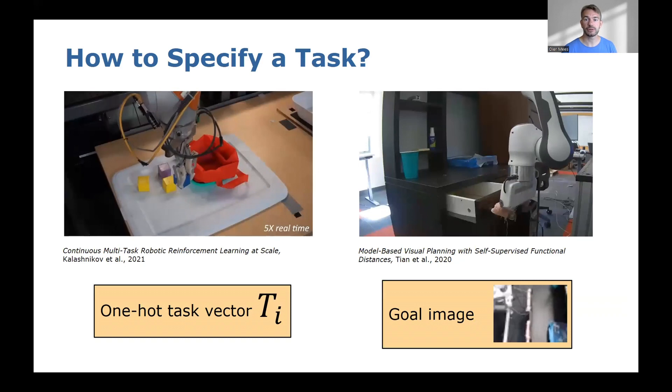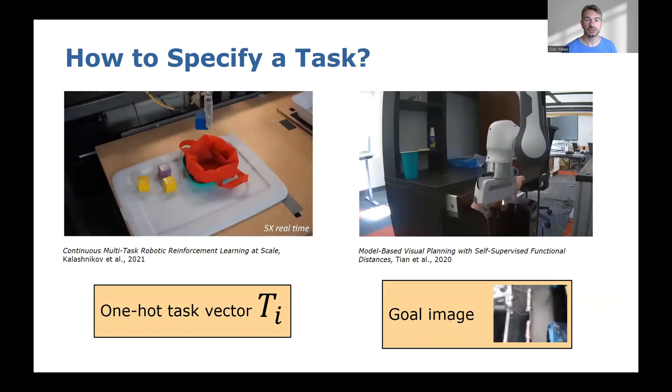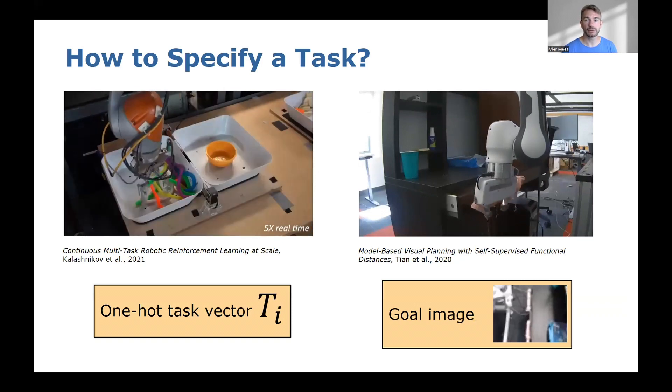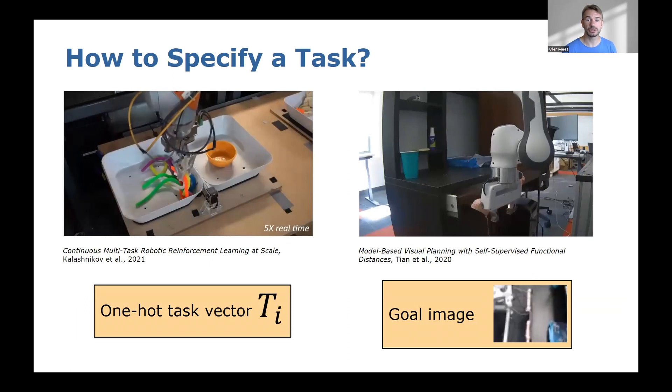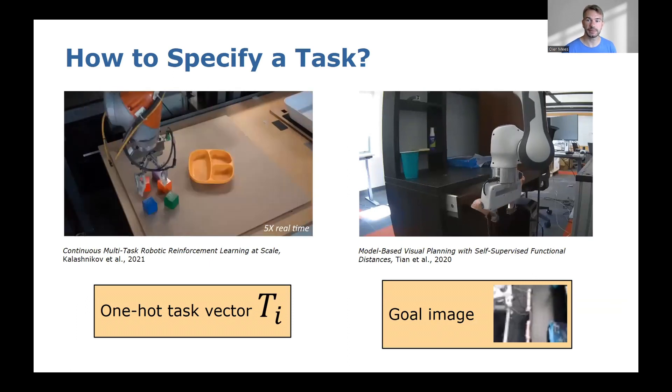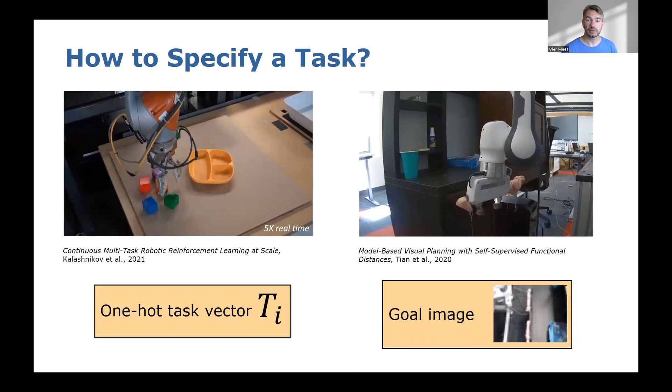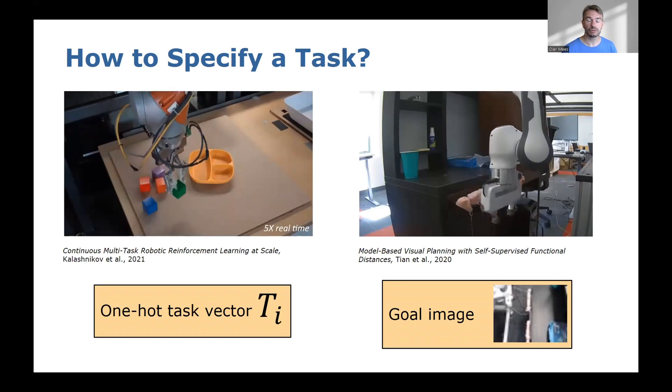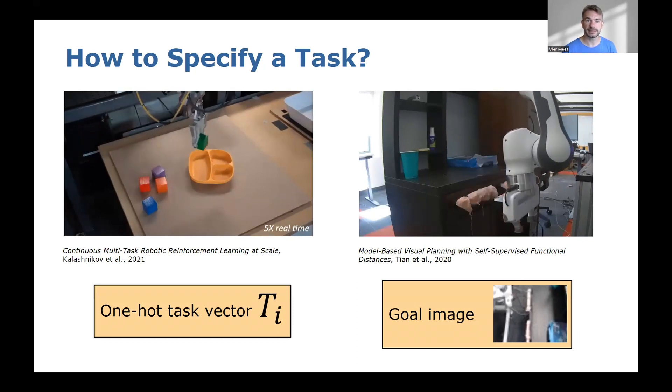Despite tremendous progress in robot learning, most approaches that learn multiple skills rely on one-hot encodings or goal images to specify tasks at test time, which are not practical for non-expert users to instruct robots in everyday real-world settings.